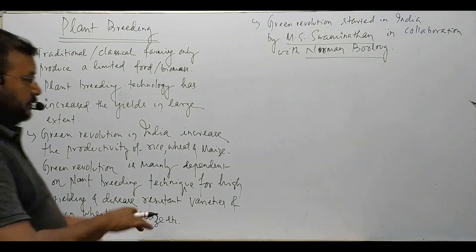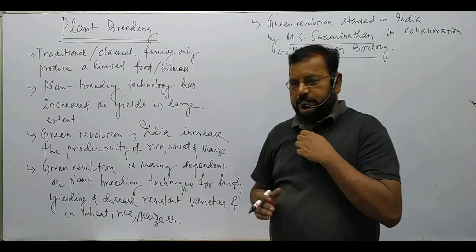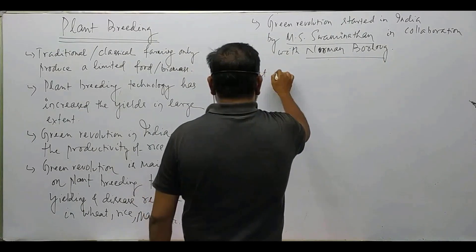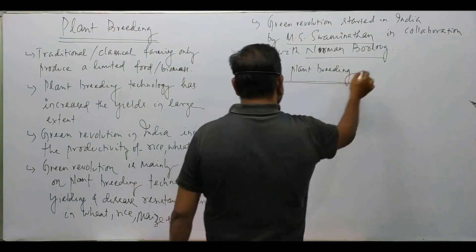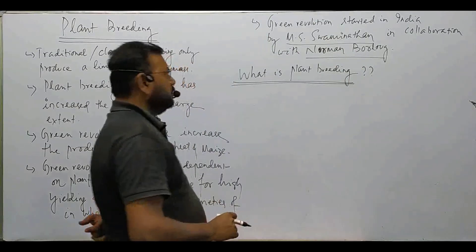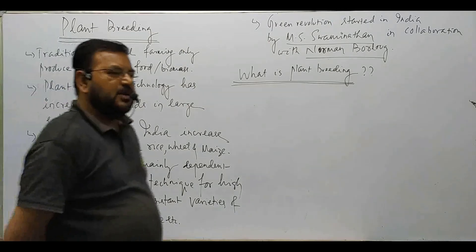Now we will look at what plant breeding is. Plant breeding is the genetic improvement of crops, or the purposeful manipulation of plant species, in order to create desired plant types that are better suited for cultivation, give better yield, and are disease resistant.